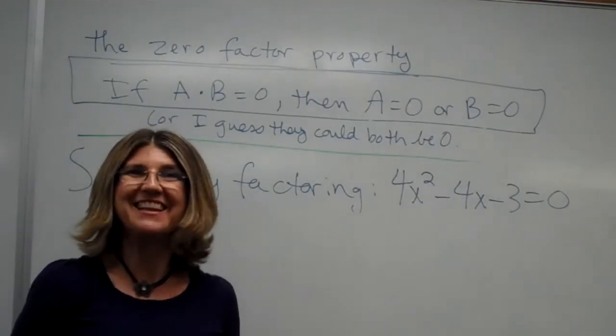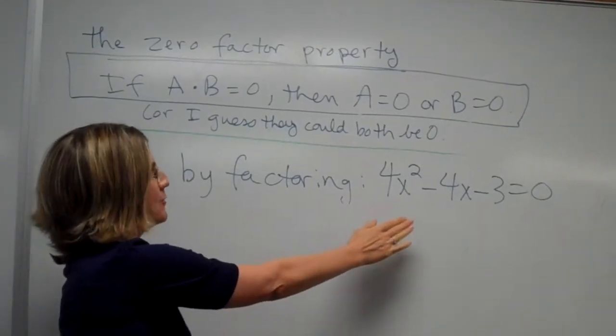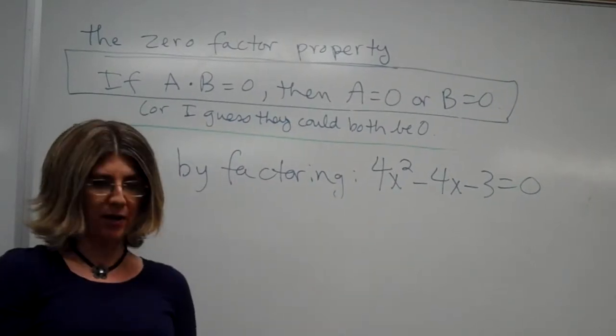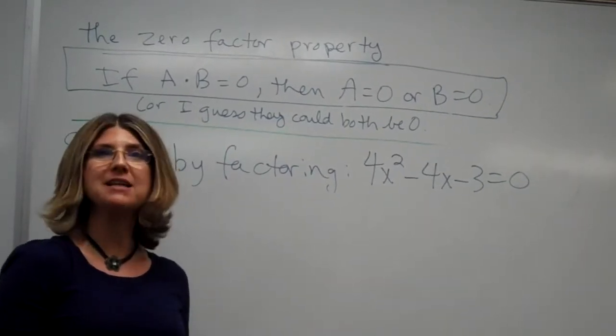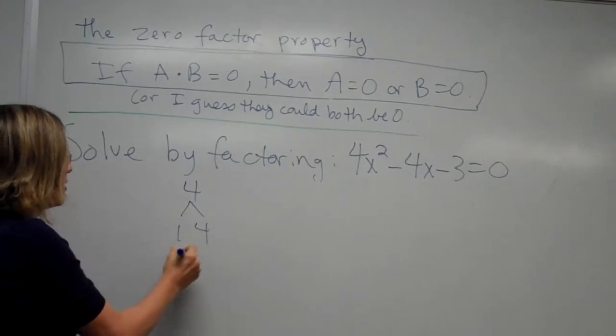Hi, superclass. Let's solve by factoring. So here we have 4x squared minus 4x minus 3 is 0. We want to factor this using the guess and test method, so we know that factors of 4 are 1 and 4 and 2 and 2,